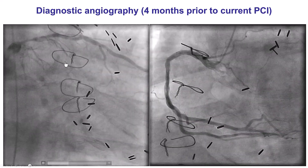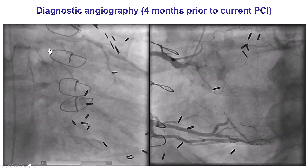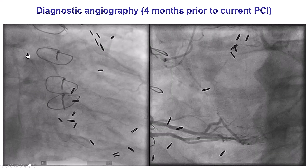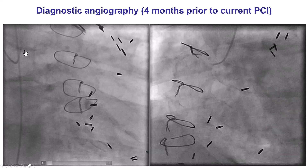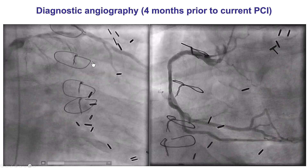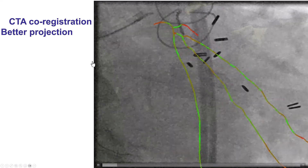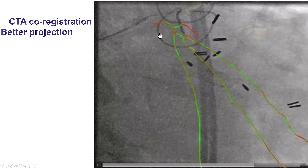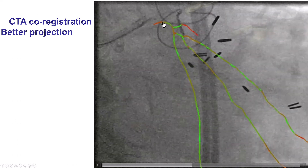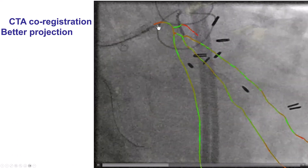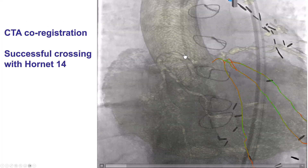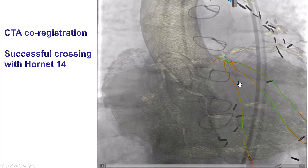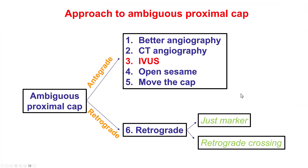This is an example of a patient who had a diagnostic angiogram before and has a CTO of the circumflex. In cases like this, we can also do what's called CT co-registration on the Siemens system, in which we can have an overlay of the CT findings with the current angiogram and use this as a guide to advance our guide wire, and this allowed us to cross the occlusion.